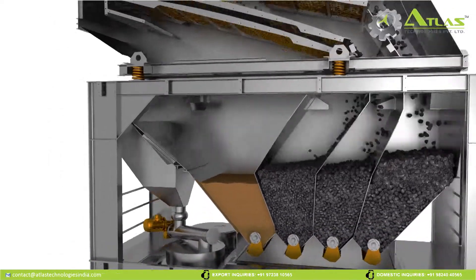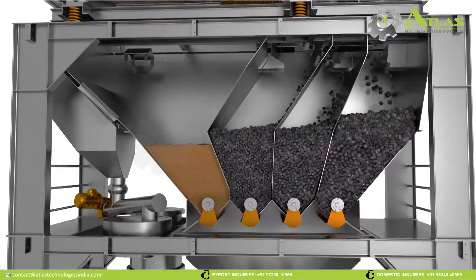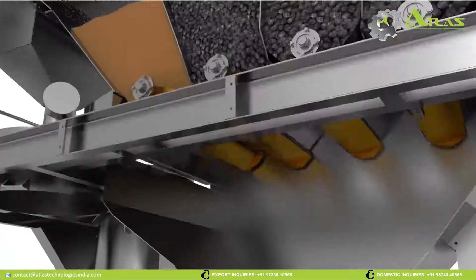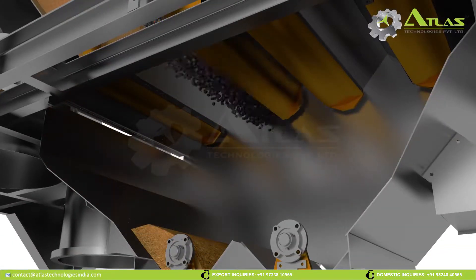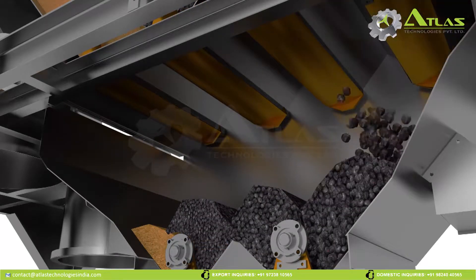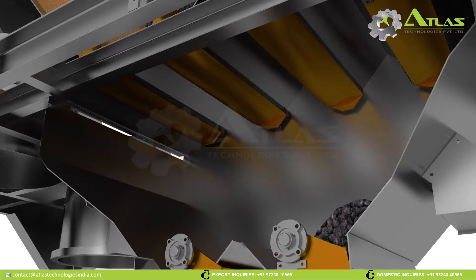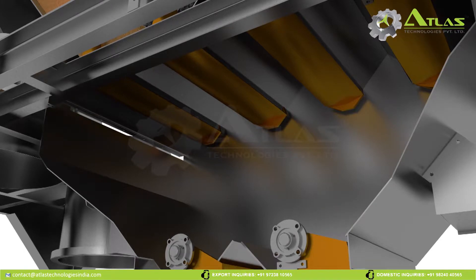Each compartment of the hotbin contains a radio gate at its bottom to feed aggregate into weighing hopper. Aggregates will be discharged from the hotbin according to predefined recipe into the weighing hopper and create a batch. Once the batch is prepared, it is discharged into the mixer.